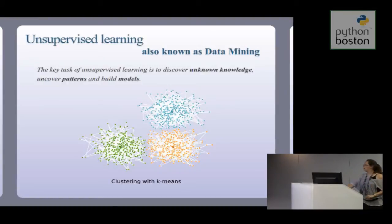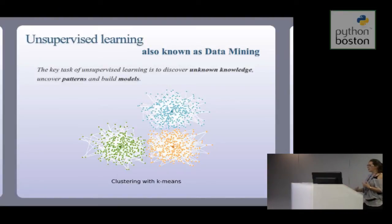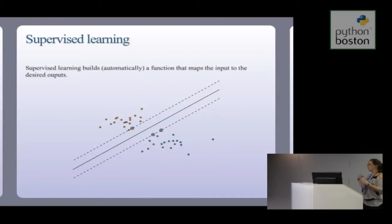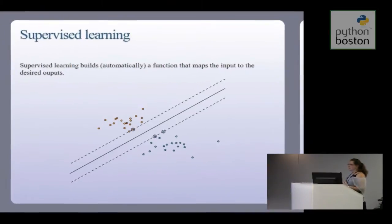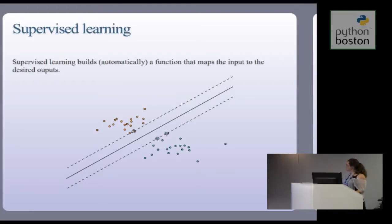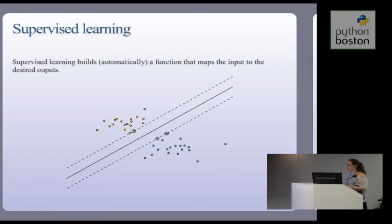The second thing we do in machine learning is supervised learning. The idea is to build automatically a function that maps an input to the desired output. Here we have dots — some are blue, some are orange — and we want to find a good hyperplane, a good delimiter between the blue group and the orange group. When you work on images or things you can't really visualize well, it's harder, but the idea is to have the algorithm learn from the data we give it.